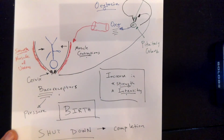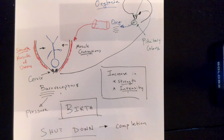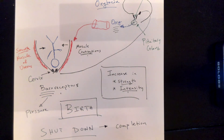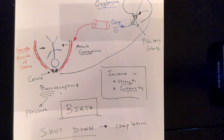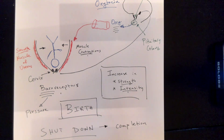Those are the two examples we use for negative and positive feedback. There are other examples, but if you've understood these two, you're on the right track. You should read other examples in the textbook, and throughout Anatomy and Physiology I and II, you will see many more examples along the way.